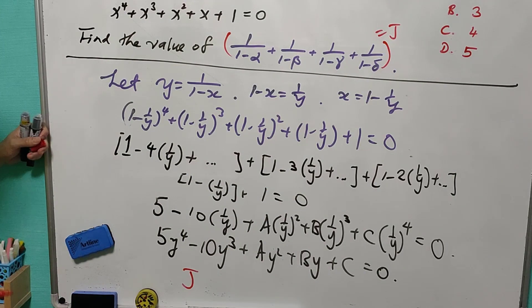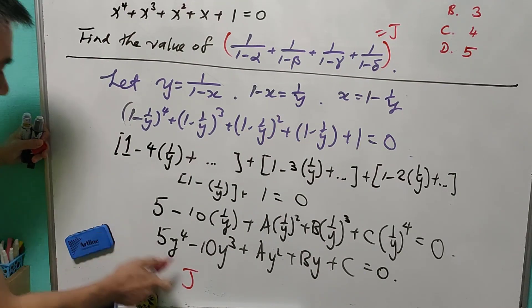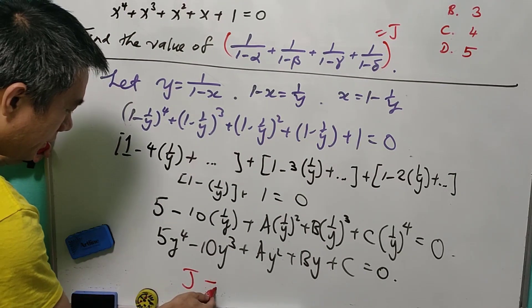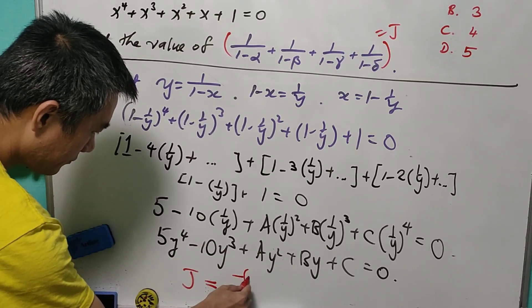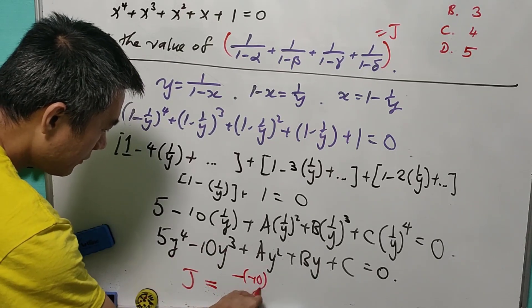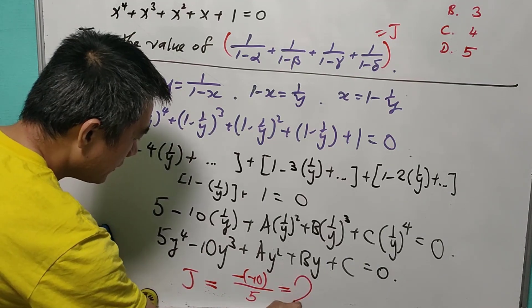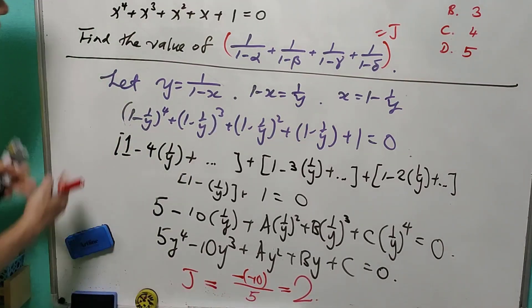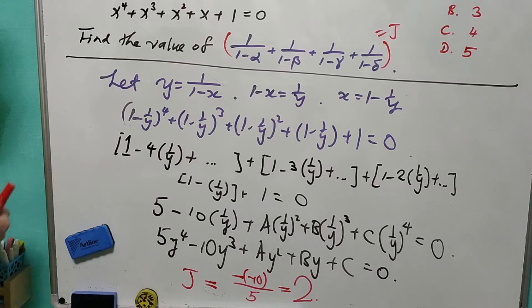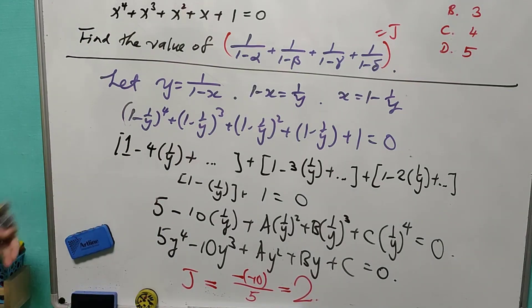J is the sum of the roots of this equation, which equals −(−10)/5 = 2. So 2 is the answer. That ends Method 1.